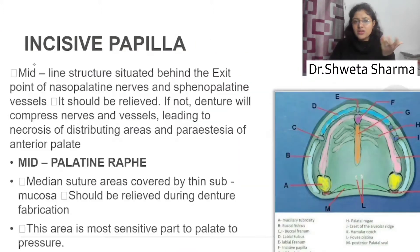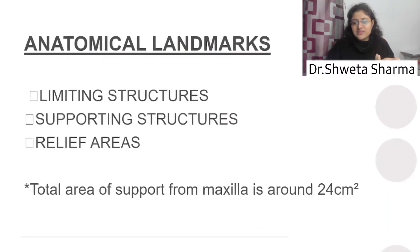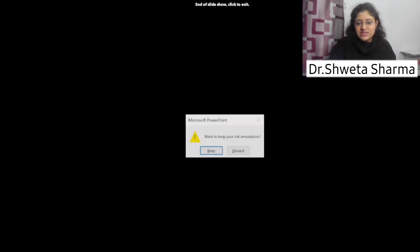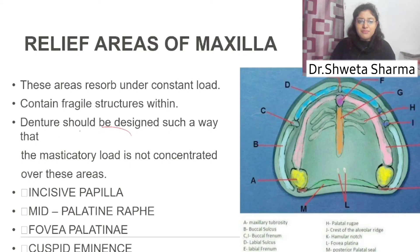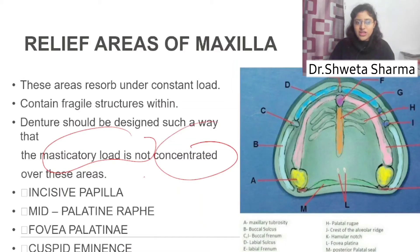They are very sensitive structures — for example, nerves, blood vessels, etc. Therefore, we cannot place masticatory loads on them. There are four relief areas. The first is the incisive papilla.